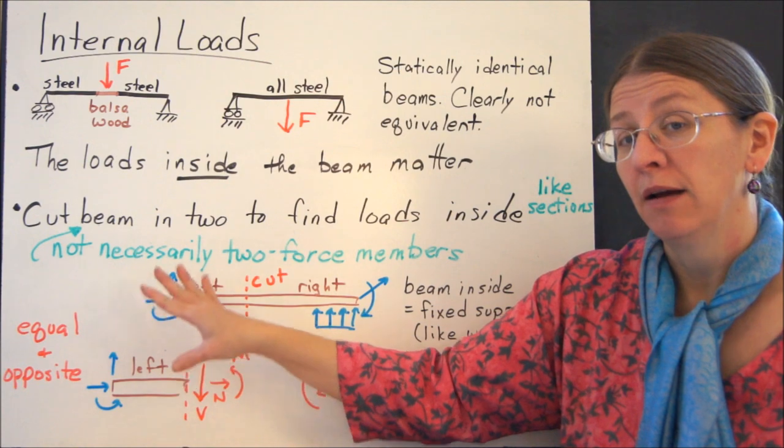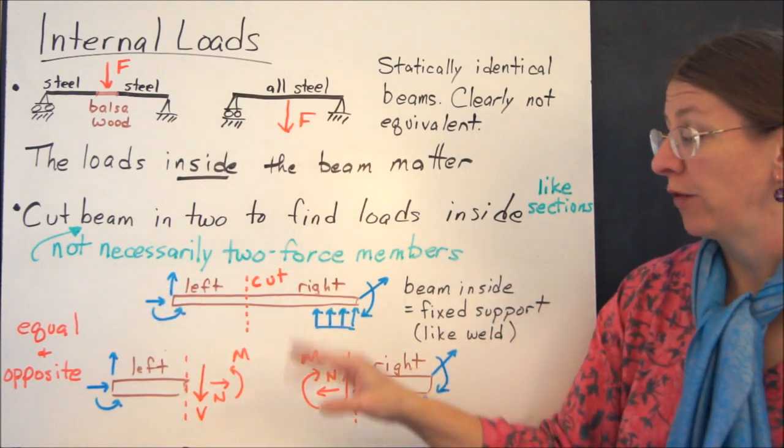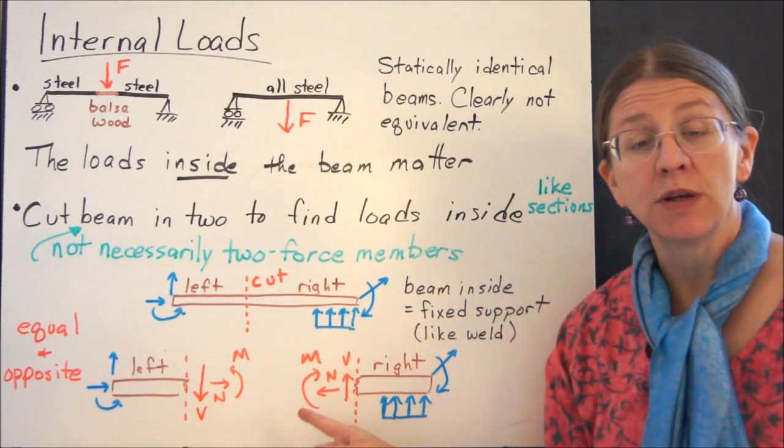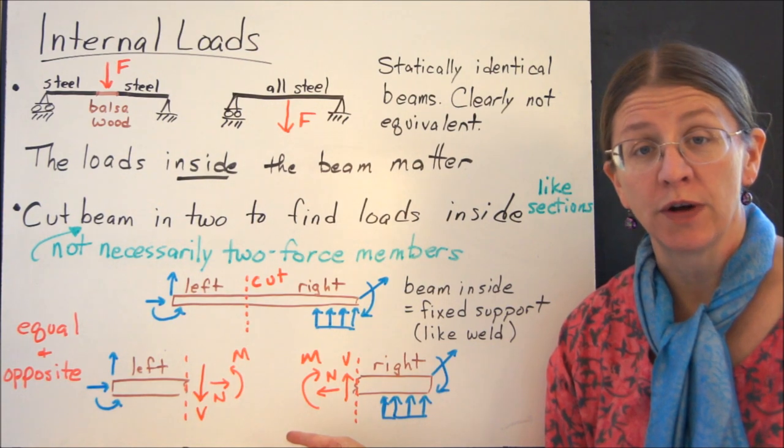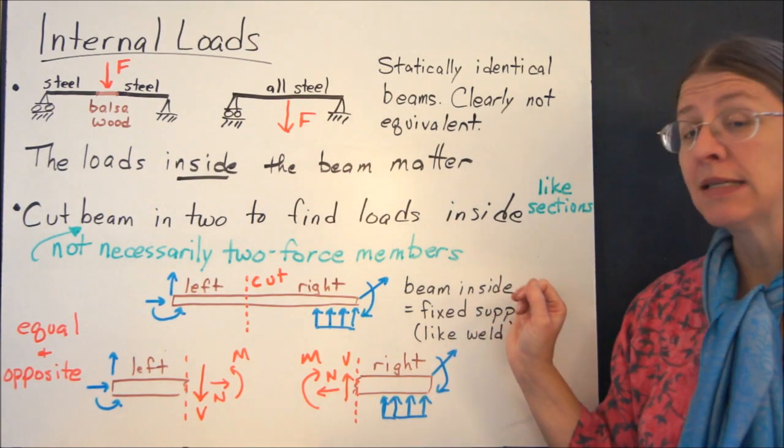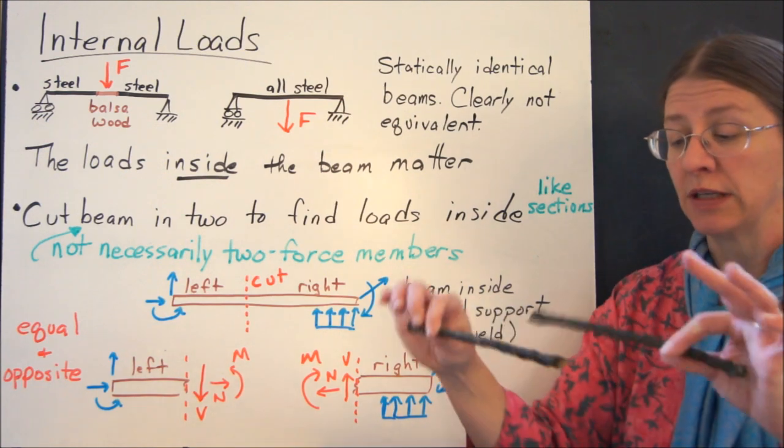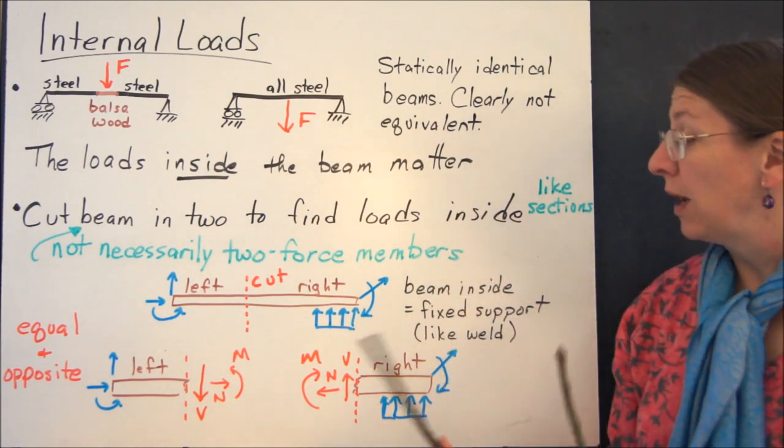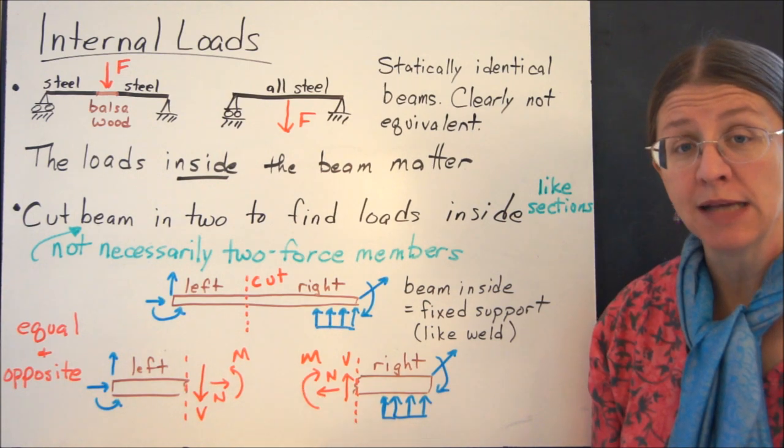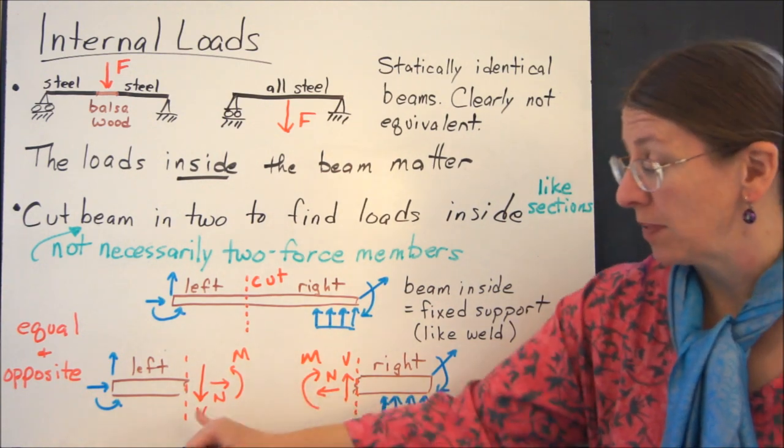If I look at the rigid body on the left and the rigid body on the right, any time I take two things apart, I have to put equal and opposite forces on there. And I know that the inside of a beam acts more like a weld than it does like a pin or something else. It certainly doesn't just bend. So when I take it apart, I have to put two forces and a moment on the inside. And they have to be equal and opposite.